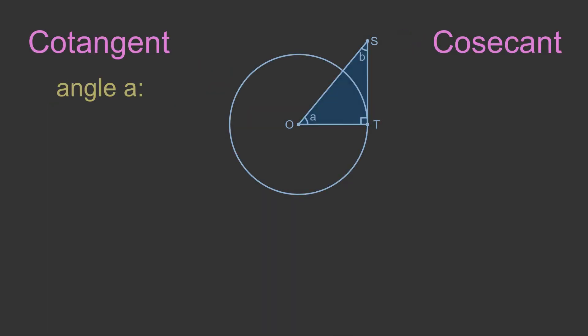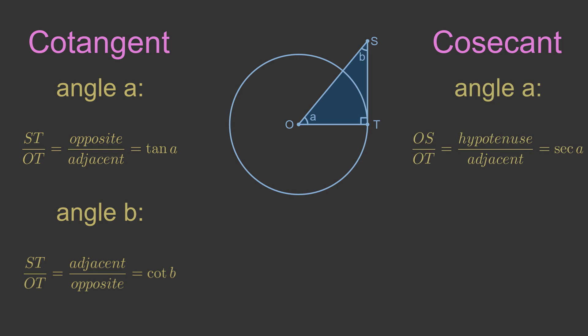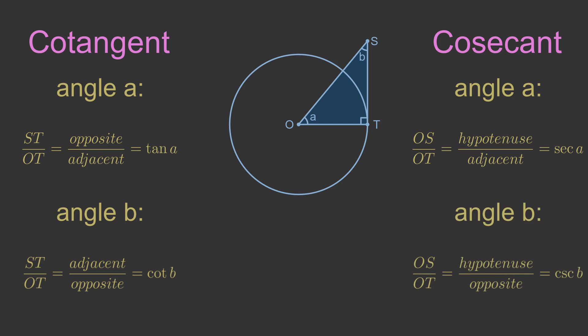For angle A, ST over OT is opposite over adjacent, which is tan A. But for angle B, ST over OT is adjacent over opposite, which is the cotangent of B. So the tangent of A is equal to the cotangent of the complementary angle B. This is similar to the relationship between sine and cosine. Similarly, for angle A, OS over OT is hypotenuse over adjacent, which is the secant. But for angle B, OS over OT is hypotenuse over opposite, which is the cosecant.